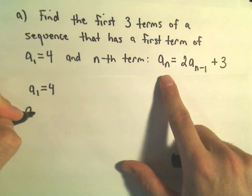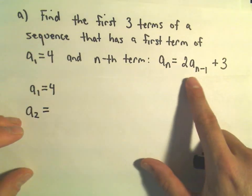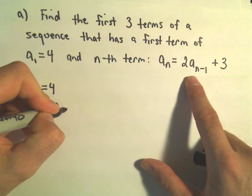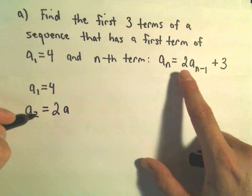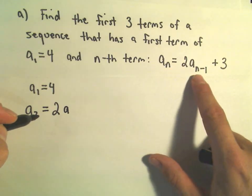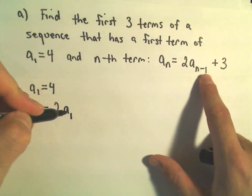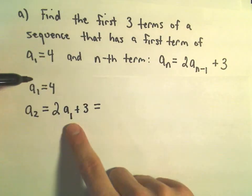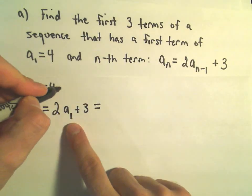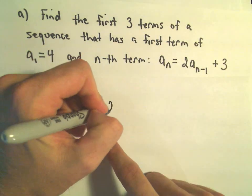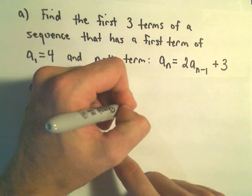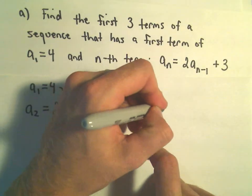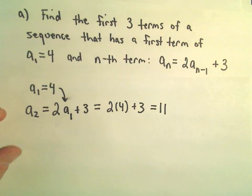If we wanted to figure out our second term, according to our formula it says we would take 2 times a sub n minus 1. Since n is 2, if we take n minus 1 we'll get a sub 1 plus 3. We know the value for a sub 1 is 4, so we plug that in and get 2 times 4 plus 3. Well, 2 times 4 is 8, and 8 plus 3 gives us 11. So that's our second term.